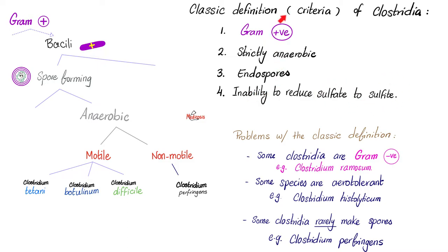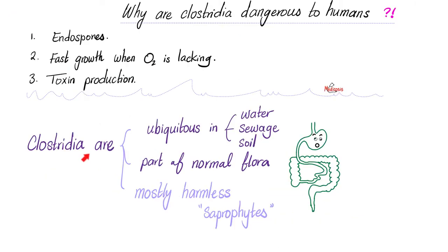In the last video, we talked about problems with the classic definition. Clostridia are everywhere — ubiquitous in water, sewage, and soil. They are part of your flora, especially in the gut, and mostly harmless saprophytes, living on dead cells or dead plants. Why are Clostridia dangerous to humans? Because they make endospores, can grow when oxygen is absent, and produce toxins.